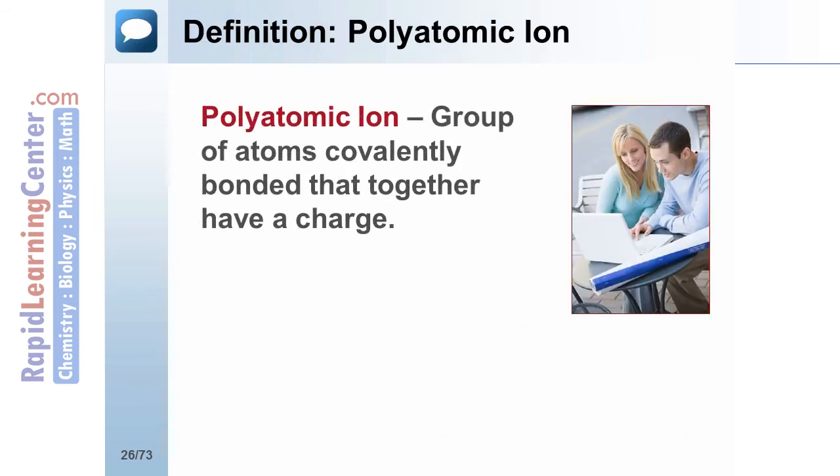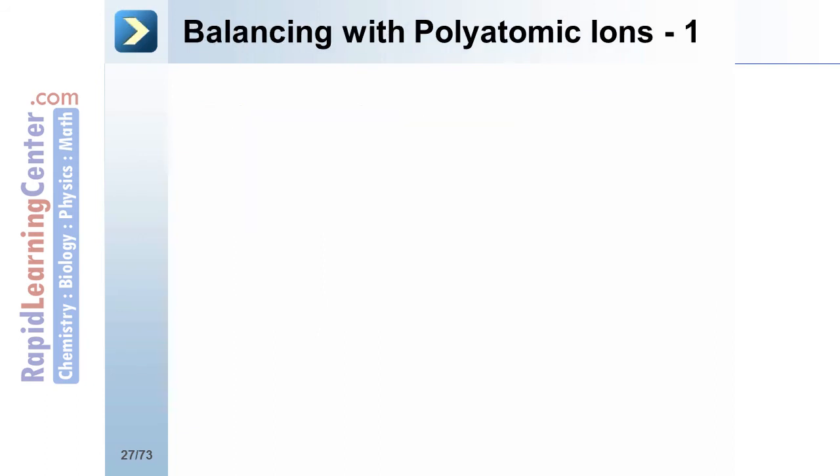Polyatomic ions are a group of atoms that are covalently bonded to each other. They overall have a net charge. For example, ammonium plus one or sulfate negative two. If you can recognize polyatomic ions in a chemical reaction and they appear intact on both sides of the reaction, you can balance them as one chunk together rather than splitting them up into individual elements.